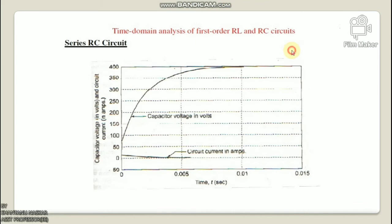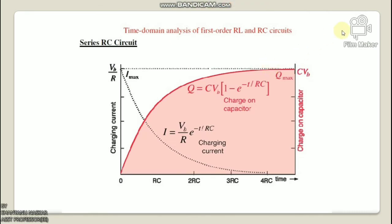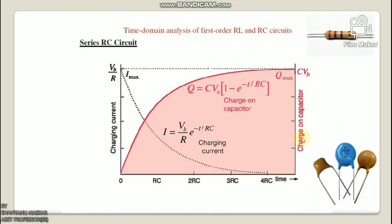Here is a graph between capacitor voltage in volts and circuit current in amperes versus time. The charging current and charge on capacitor are shown at time constants RC, 2RC, 3RC, and 4RC. The maximum current is V/R (I_max). The charging current is (Vb/R)·e^(−t/RC) and the charge on the capacitor is Q = C·Vb·(1 − e^(−t/RC)).